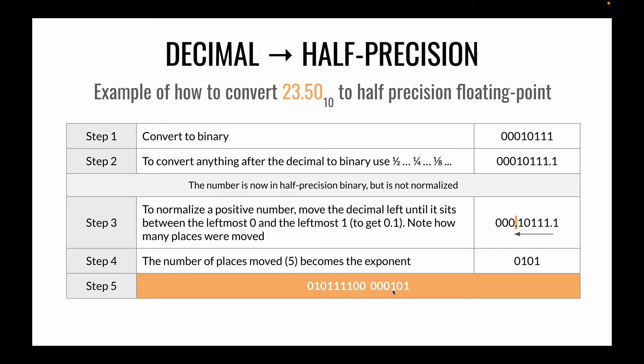Let's look at another example of 23.50. So in fixed point this is easy again. We have 23.1 over 2. So this gives us 0.5. But it's not normalized. To normalize it we need to move the decimal place over until it sits between the leftmost 0 and the leftmost 1. In this case it takes us 5 moves. So our exponent becomes 5. And we end up with the number 23 normalized and an exponent of 5.